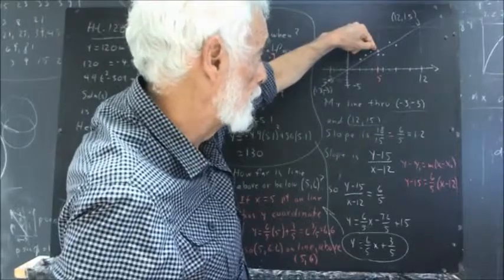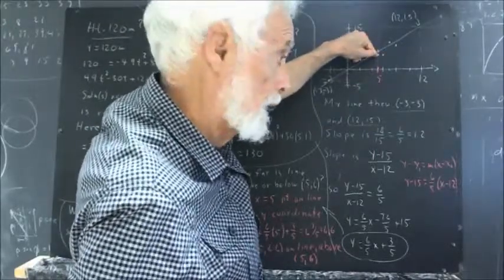Okay, so this point on the line for x equals 5 is higher than the point 5, 6.